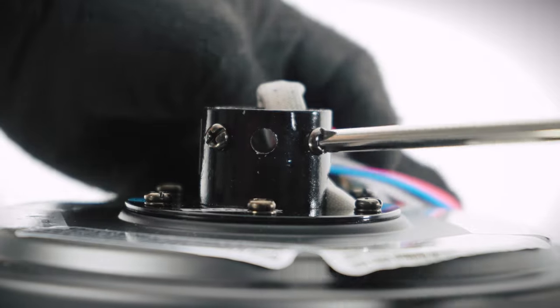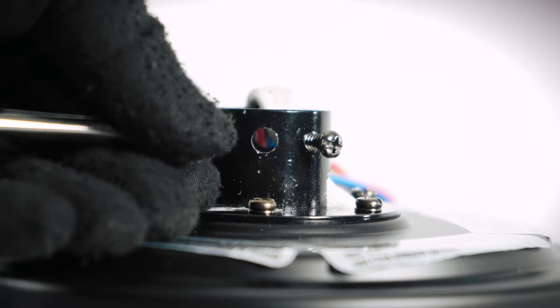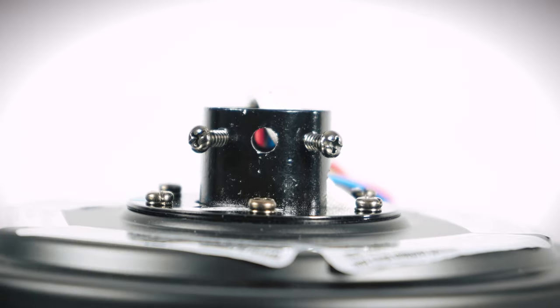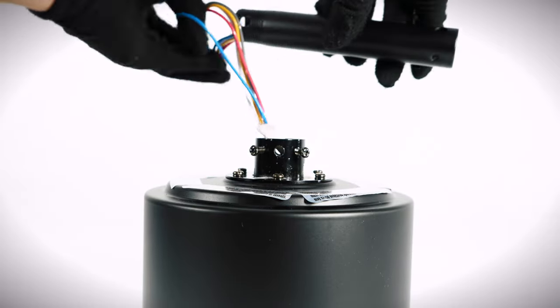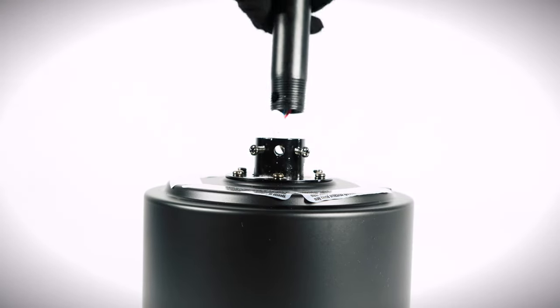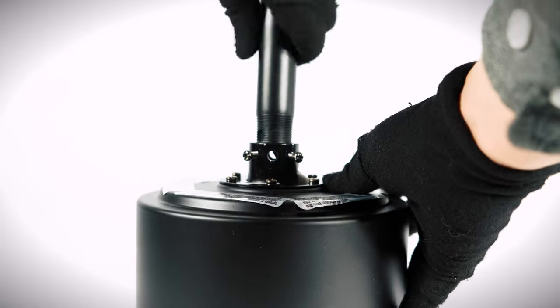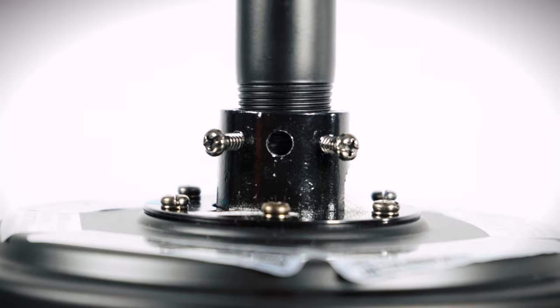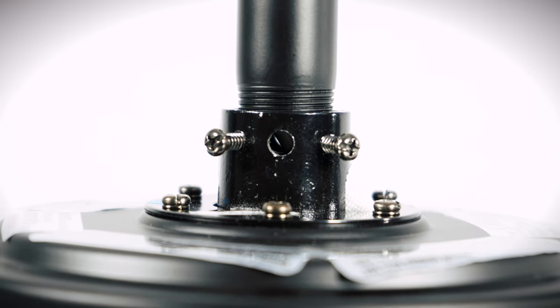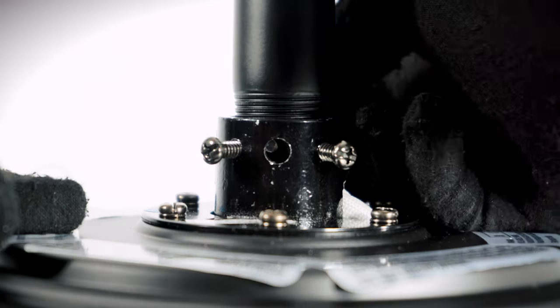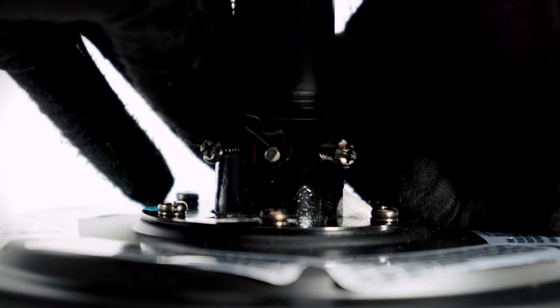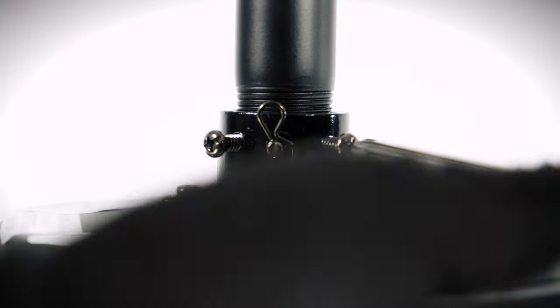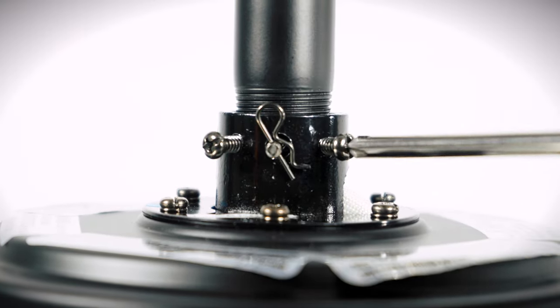Loosen the two collar set screws. Slide the wires through the down rod and insert it into the collar. Align the holes, then insert the clevis pin and cotter pin. Note that the down rod does not need to be completely tightened into the collar. Tighten the two collar set screws.